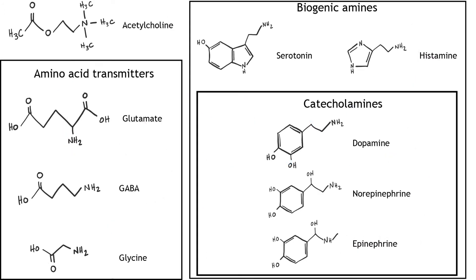The small molecule transmitters can be divided into two main groups: amino acid neurotransmitters and biogenic amines, also called monoamines. In addition to acting as neurotransmitters, the amino acids glutamate and glycine are used to synthesize proteins in all cell types throughout the body. GABA is a metabolite of glutamate, but is not used in protein synthesis in the body.